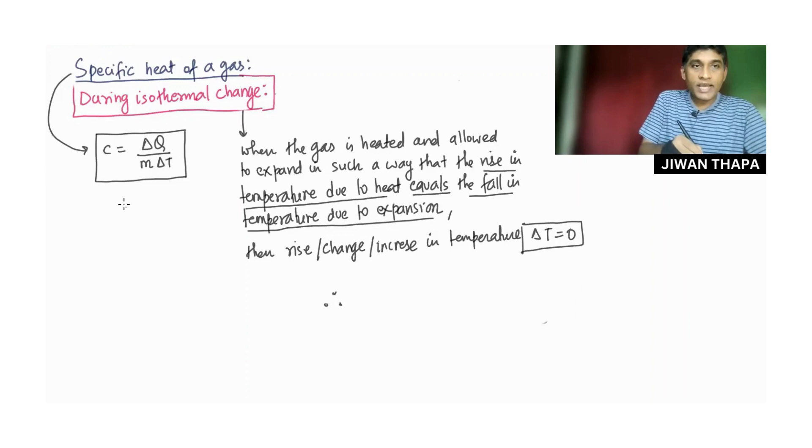Therefore, specific heat of gas during isothermal change is given by C equals delta Q divided by m, and we know delta T is zero. So we get C equals infinity. Specific heat of gas during isothermal change is infinity.